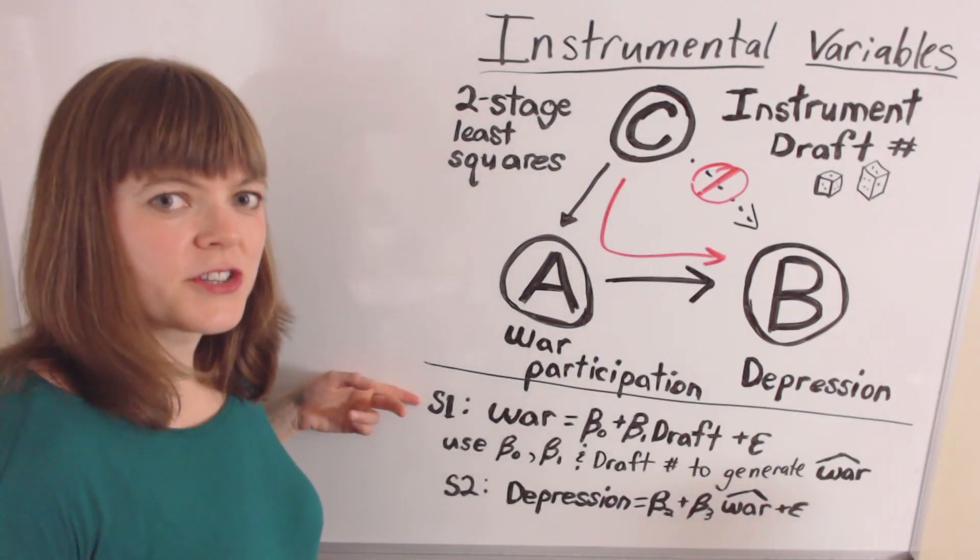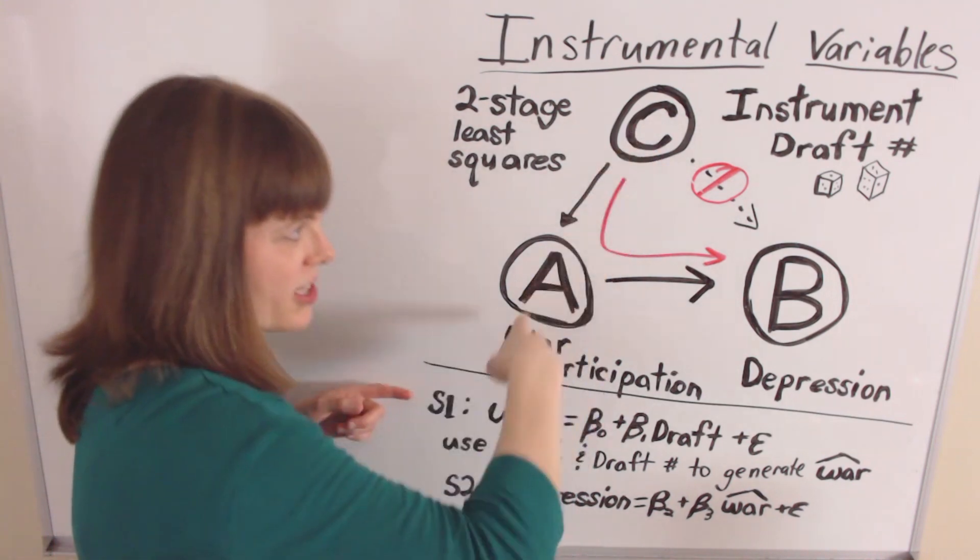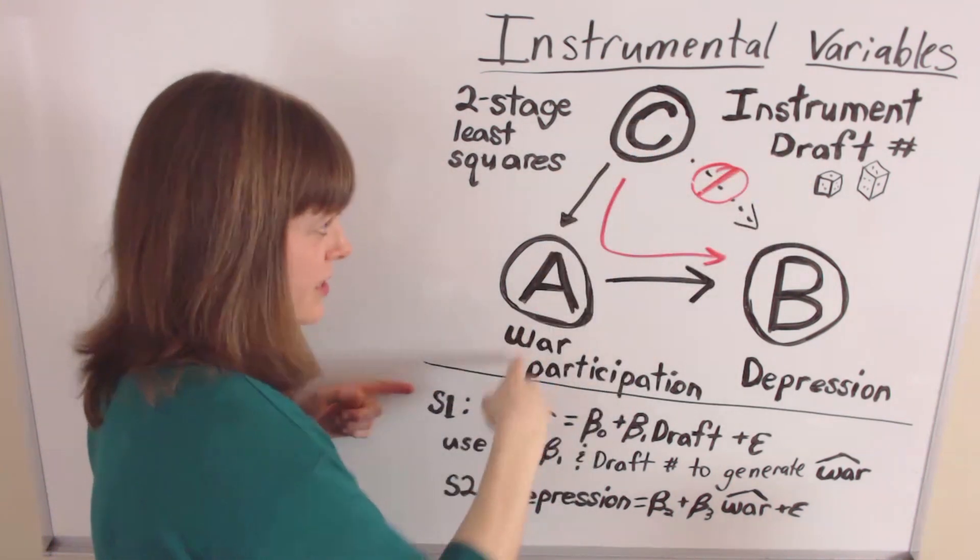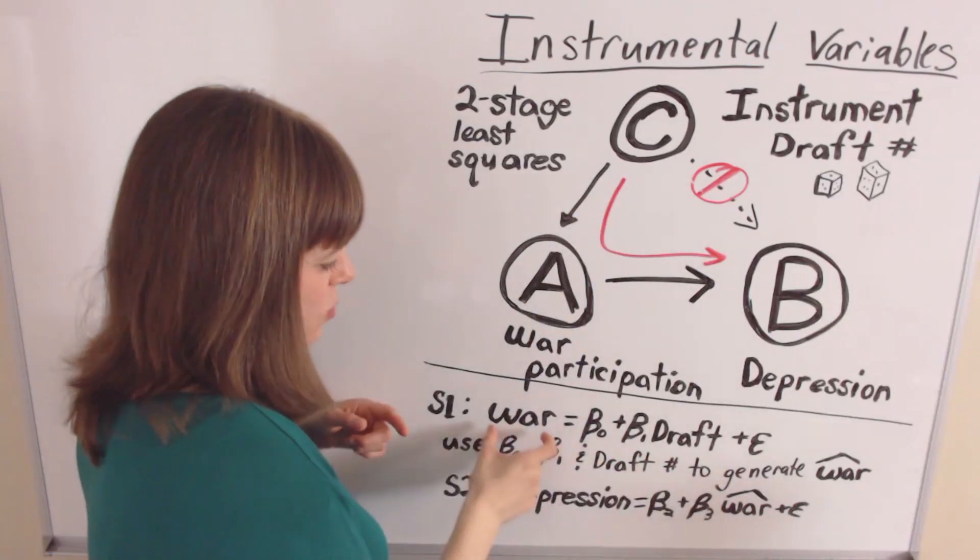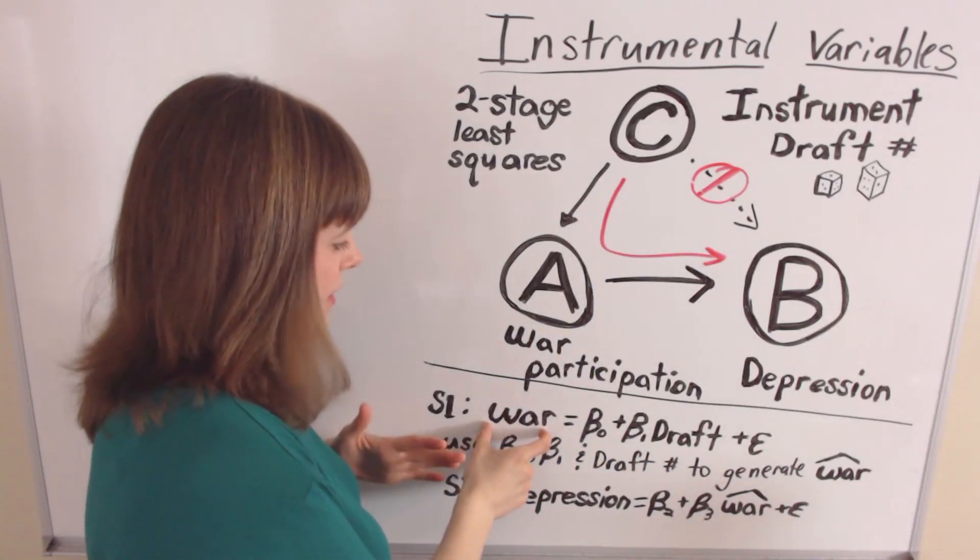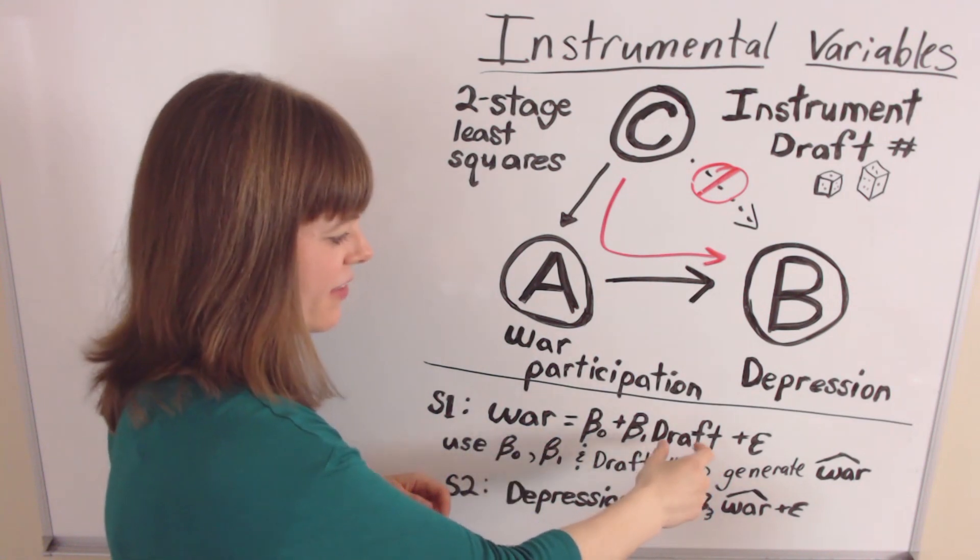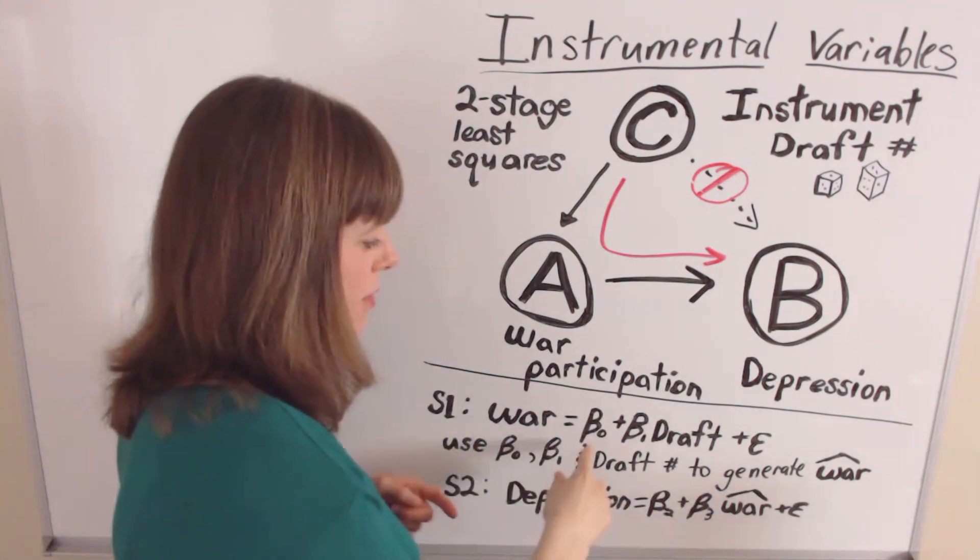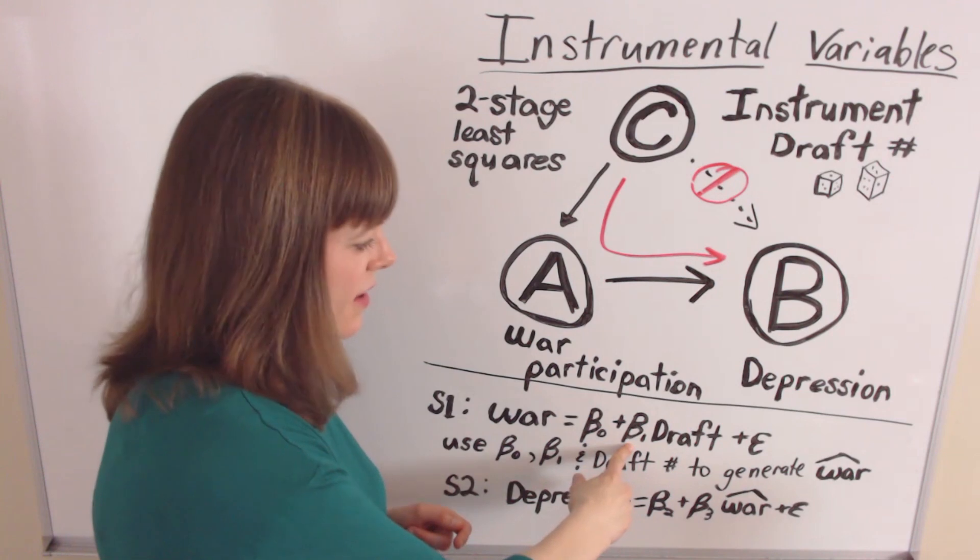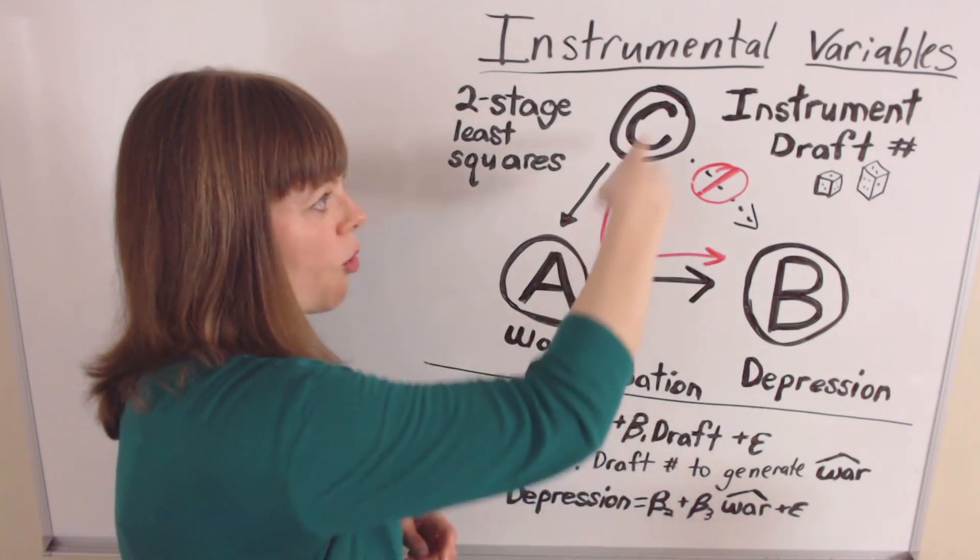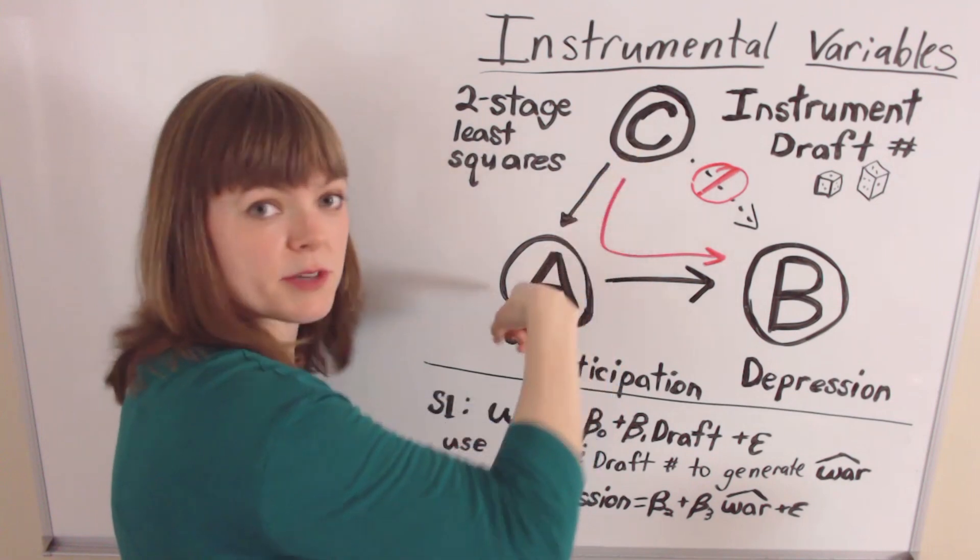The first stage of our two-stage least squares process is going to be a regression between our instrument, the draft number, and war participation. And that regression has war participation on the left-hand side of the equation and draft number on the right-hand side of the equation. We come up with beta-naught and beta-one, beta-one being the coefficient on draft number here or the degree of correlation between these two things.